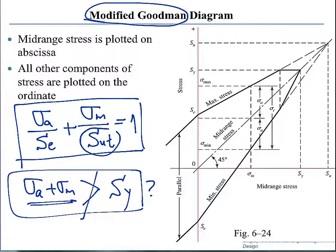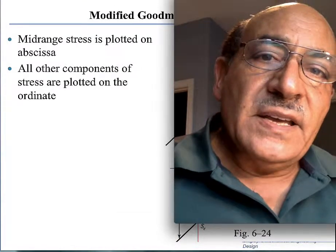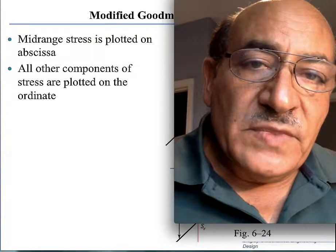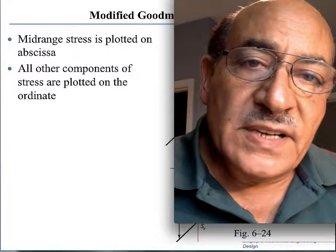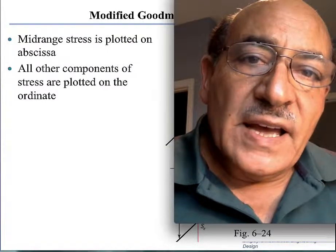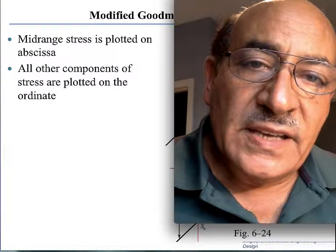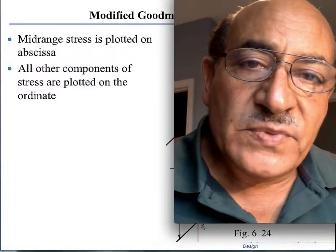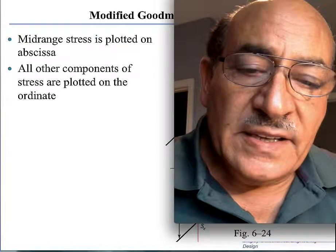The idea here is that we want to first show a diagram that illustrates how you combine the alternating with the mean and not exceed the strength of the material under any conditions. Then, instead of using a diagram, we will use equations, which are much easier to use because we can always either program them or use them on a calculator.